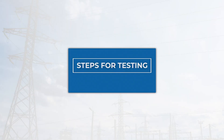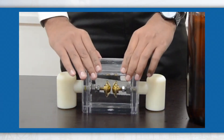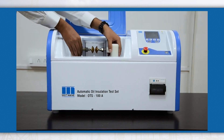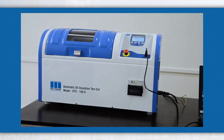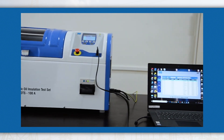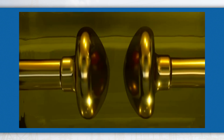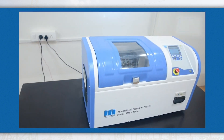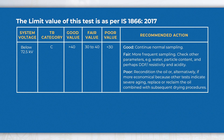This test is conducted by placing an oil sample between two electrodes and applying AC voltage gradually by not more than 2 kV per second, until the electrodes have enough potential and start to conduct through the oil. The limit value of this test is as per IS 1866:2017, given in the table.